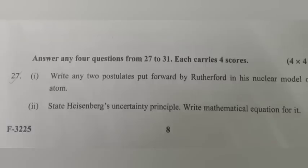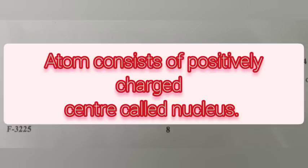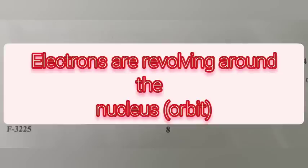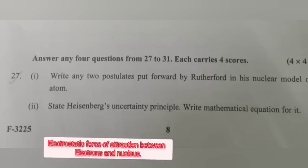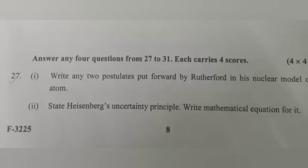Question: Write any two postulates put forward by Rutherford in his nuclear model of the atom. Answer: 1. The atom consists of a positively charged center called the nucleus. 2. Electrons are revolving around the nucleus. 3. Electrons and the nucleus are held together by electrostatic force of attraction.